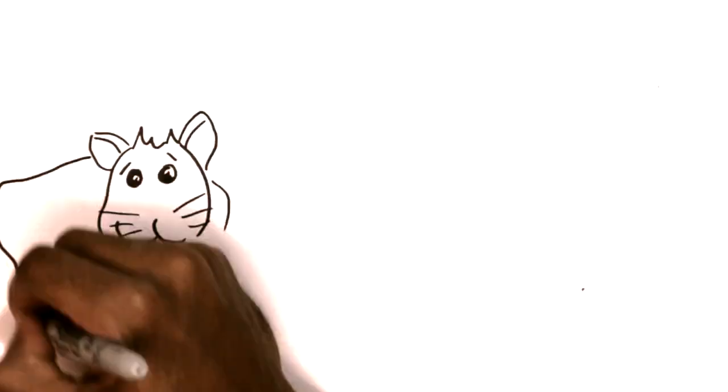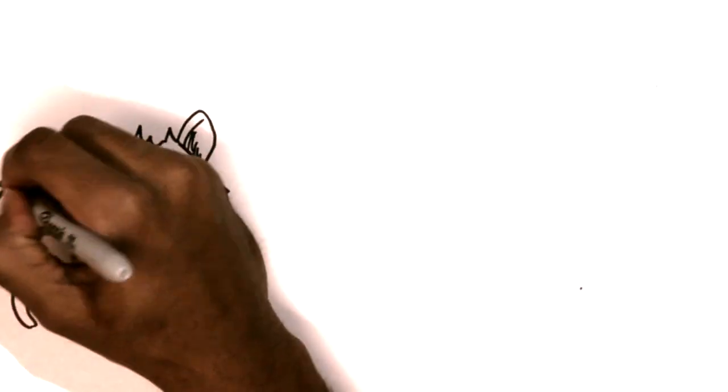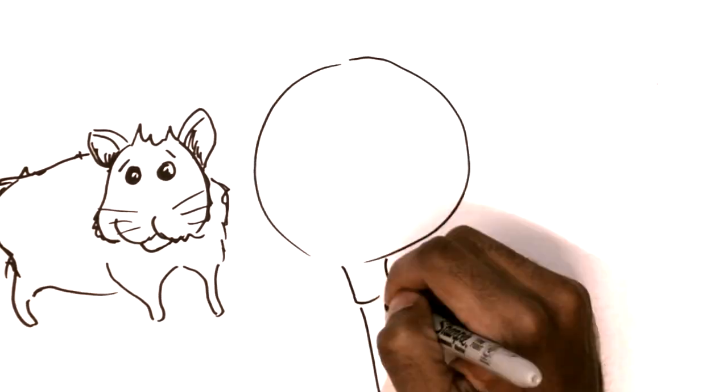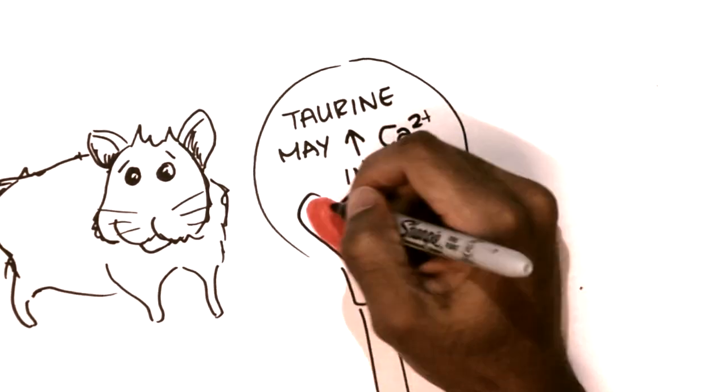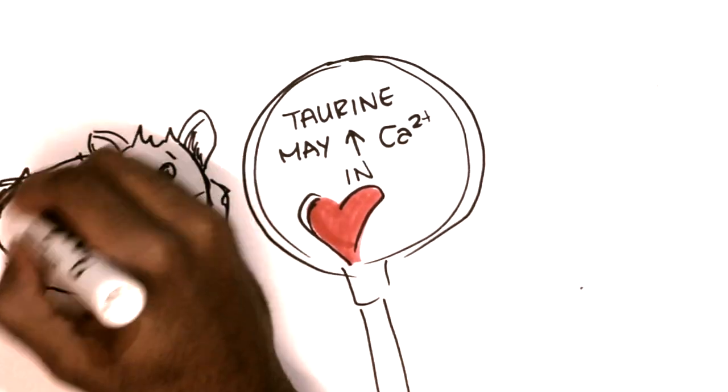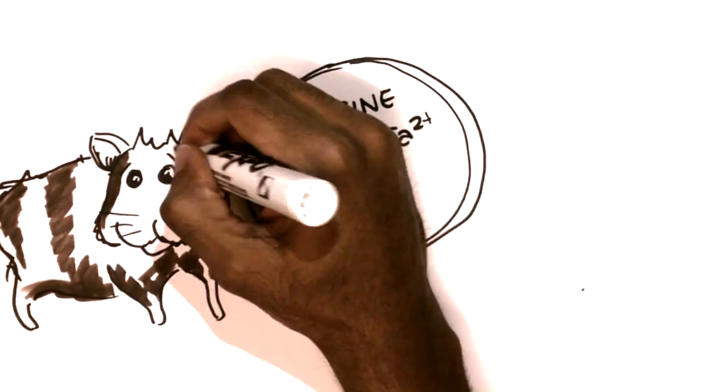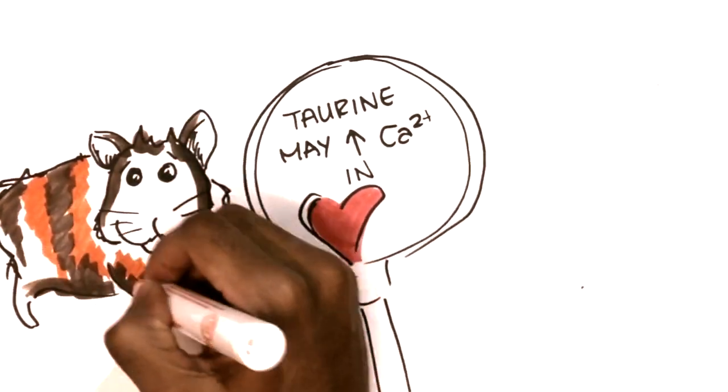Another group looked at hamsters and have suggested that taurine may increase calcium in the heart, allowing it to work better. This was done after a clinical trial in humans where researchers looked at patients with congestive heart failure. Unfortunately, that study showed no significant changes to their clinical symptoms.